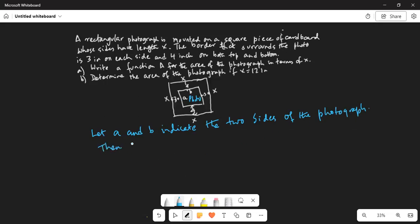Then area of the photograph is a times b. Now what is a? a is the length of the photograph, and a is equal to the total length of the outside square x, from which you subtract 4 on the top and 4 on the bottom. So a is equal to x minus 4 minus 4, which is x minus 8.